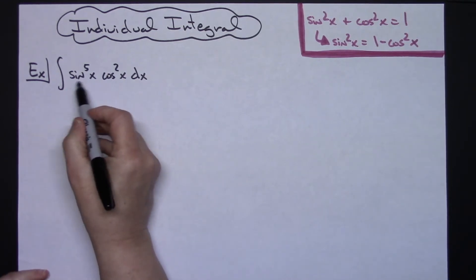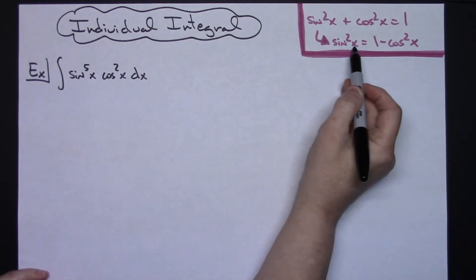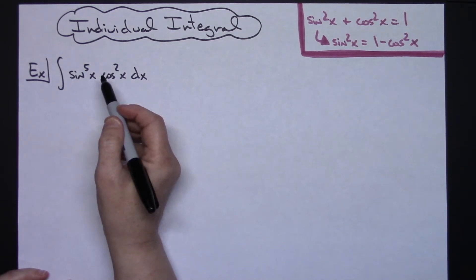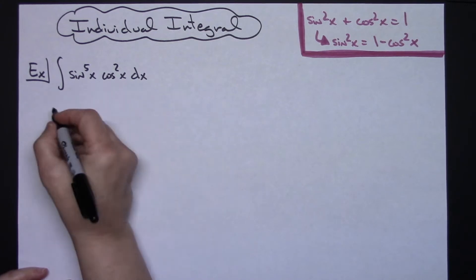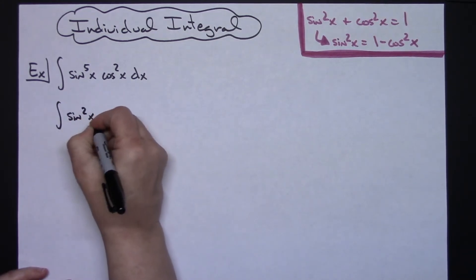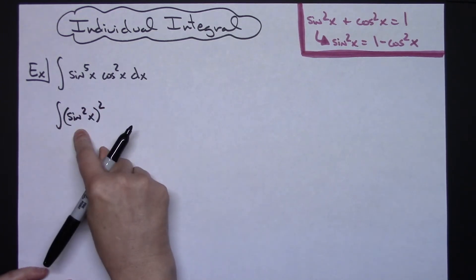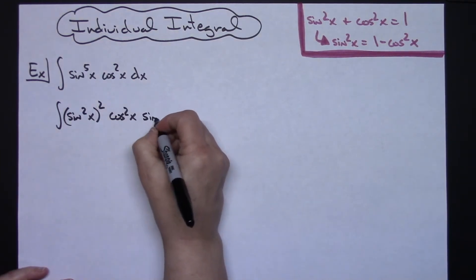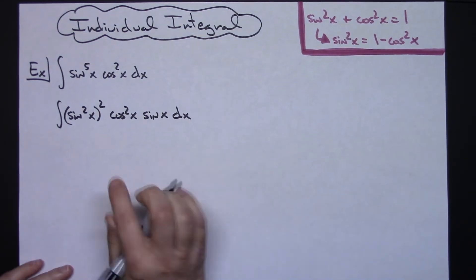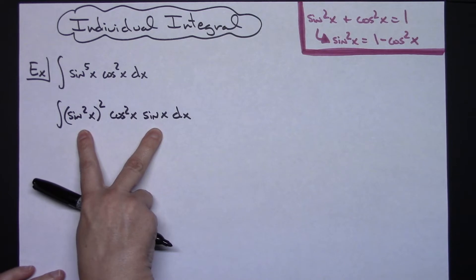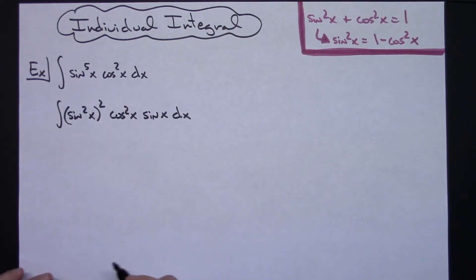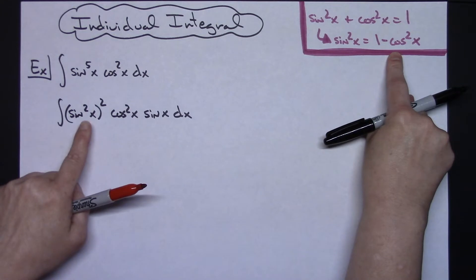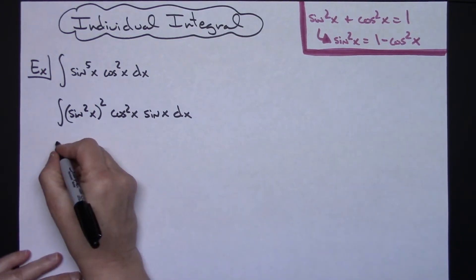I've got five sines and I need a sine squared, so I'm going to do sine squared squared — a power raised to a power means I multiply, so 2 times 2 is 4 — and then I'll have an extra sine left over. So I'm going to rewrite this as sine squared x quantity squared, which gives me four sines. The cosine squared x stays the same, and I'll have an extra sine x out front, giving me sine x to the fifth power overall.